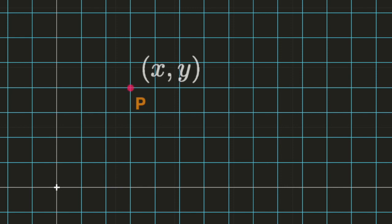Consider a Cartesian coordinate system in the plane. With every point p having coordinates x, y, we associate the complex number z equal to x plus iy. This gives a one-to-one correspondence between the complex numbers and points of the plane, and this graphical model of the complex numbers is called the complex plane.